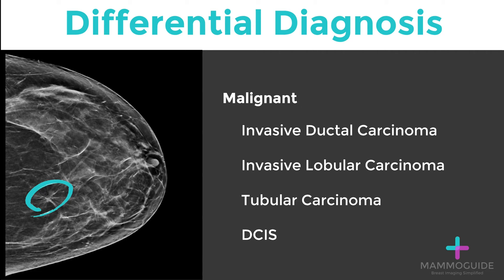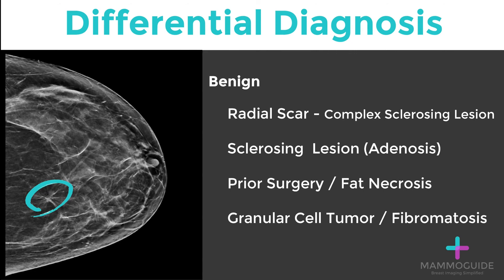And lastly, ductal carcinoma in situ, or DCIS, can sometimes present with only architectural distortion as the finding on a mammogram. There are also a few benign causes of architectural distortion.